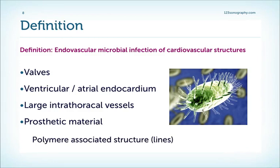The true definition of endocarditis is an endovascular microbial infection of cardiovascular structures. It can affect not only the valves but also the endocardium of the atria and the ventricles, and even the large intrathoracic vessels — in particular also prosthetic material such as polymer-associated structures and prosthetic heart valves.